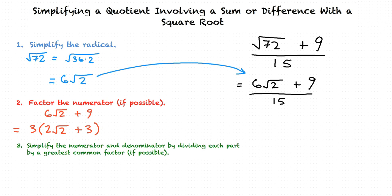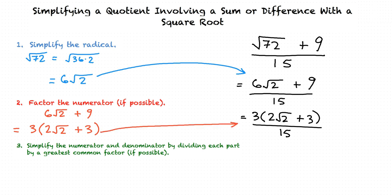After dividing each term of the numerator by 3, we now have 3 times the quantity of 2 times the square root of 2 plus 3. Written as a fraction, we now have 3 times the quantity of 2 times the square root of 2 plus 3, all divided by 15.